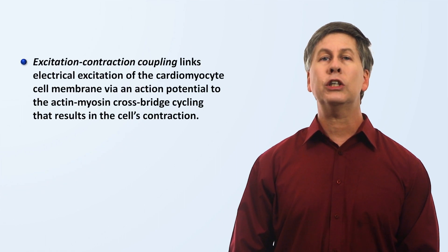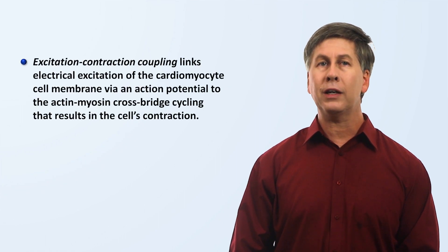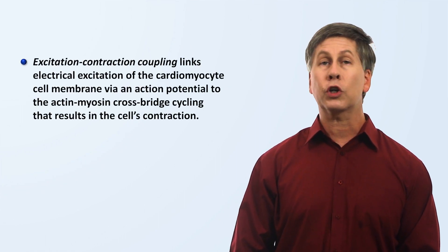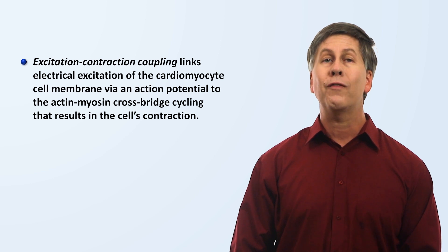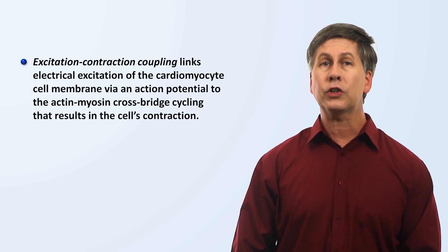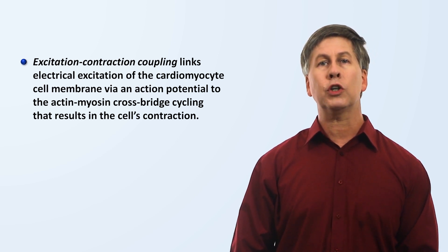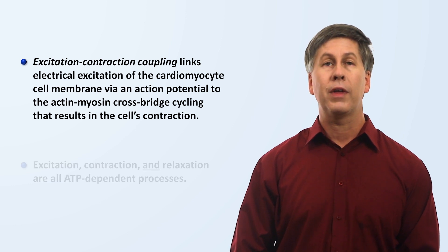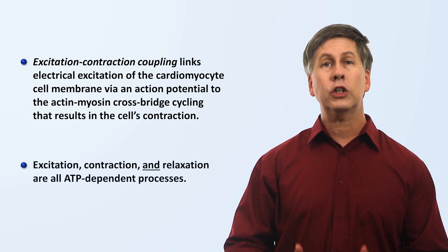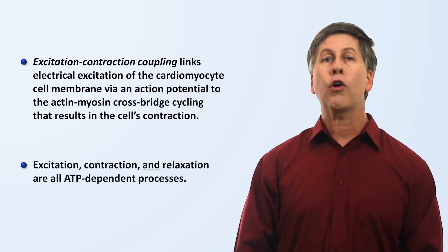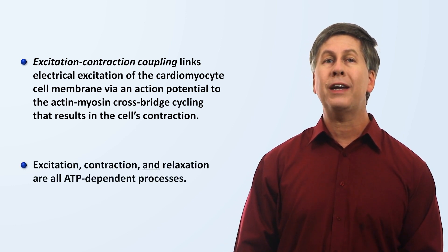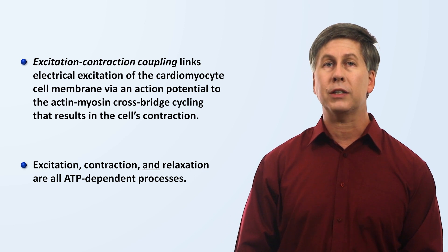To summarize: excitation-contraction coupling links electrical excitation of the cardiomyocyte cell membrane via an action potential to the actin-myosin cross-bridge cycling that results in the cell's contraction. Excitation, contraction, and relaxation are all ATP-dependent processes.